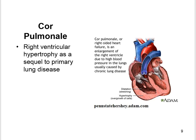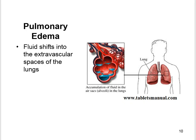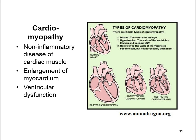Cor pulmonale is right ventricular hypertrophy as a sequel to primary lung disease. Pulmonary edema is when fluid shifts into the extravascular spaces in the lungs, making breathing difficult. Cardiomyopathy is a non-inflammatory disease of cardiac muscle involving enlargement of the myocardium and ventricular dysfunction.